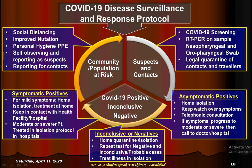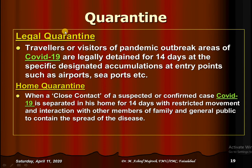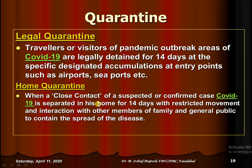Regarding interventions in disease surveillance and response: legal quarantine means travelers or visitors from pandemic outbreak areas of COVID-19 are legally detained for 14 days at specific designated accommodation at entry points such as airports and seaports, under international health regulations. Home quarantine is when a close contact, suspect, or confirmed case of COVID-19 is separated in their home for 14 days with restricted movement and interaction with family members and the general public, to curtail the spread of disease.